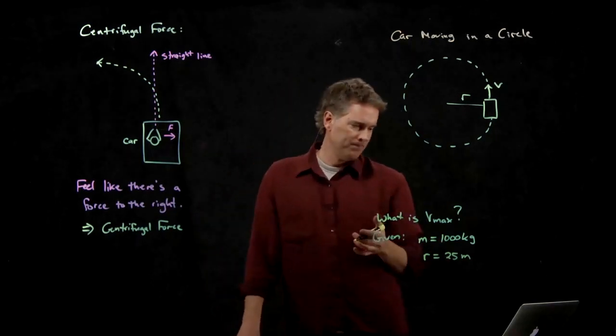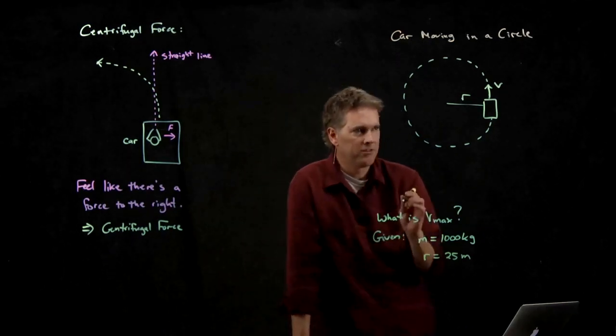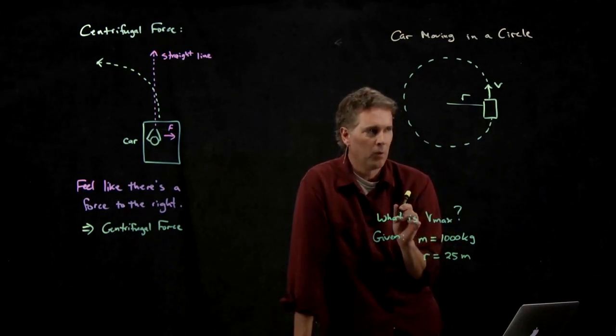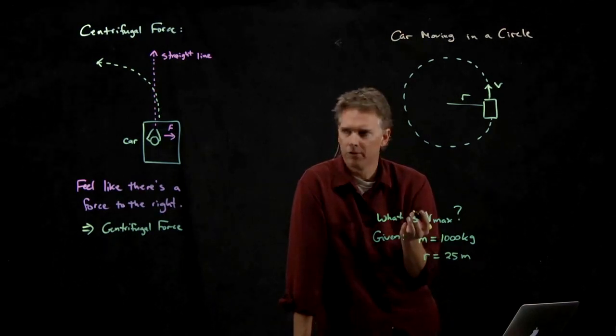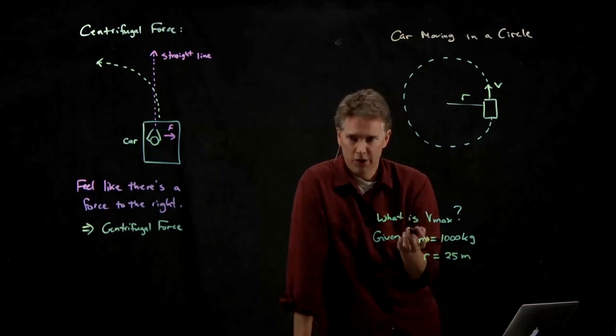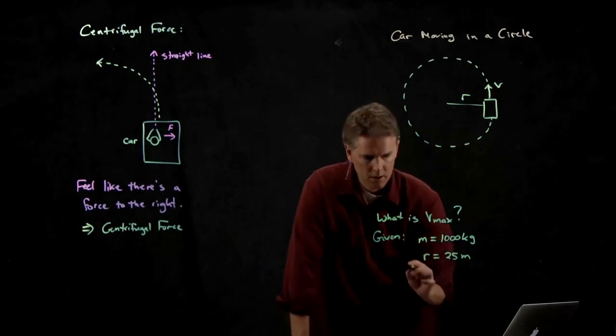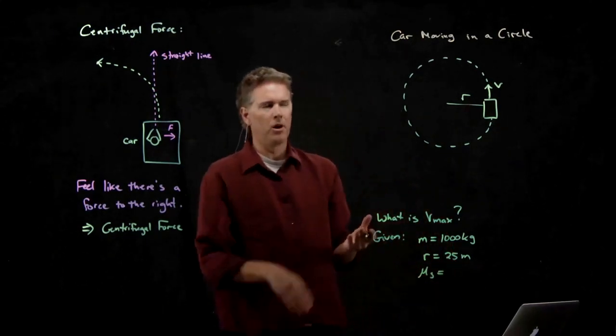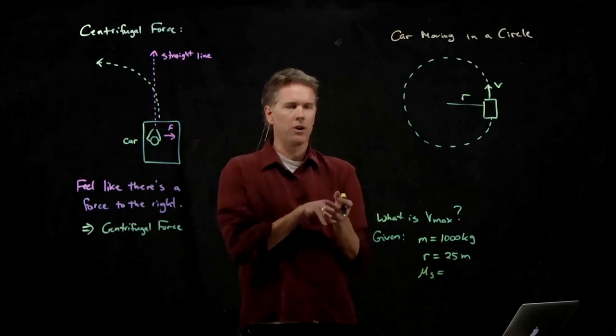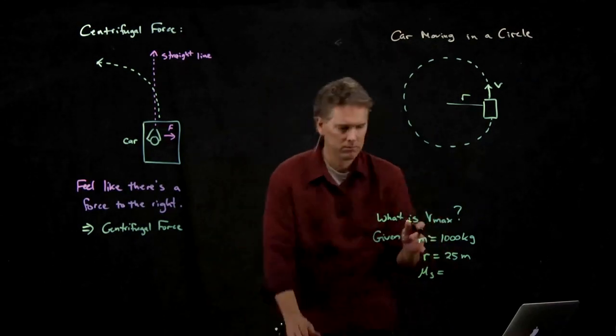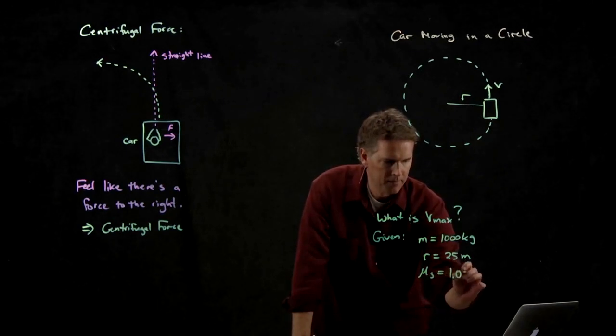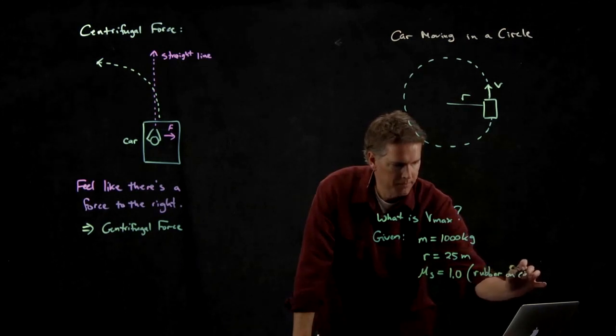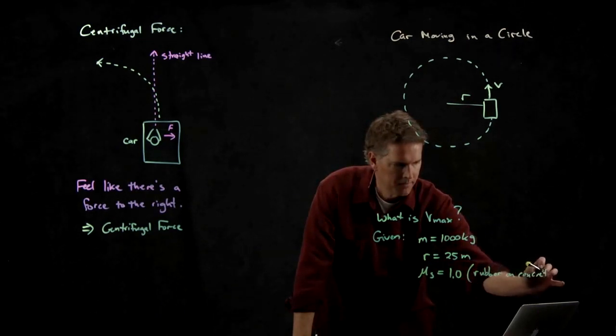What else do we need to know? We need to know something about the force that is holding us in this circle. So what force is actually holding us in that circle? Friction. Static friction. In that case, we need to know what mu s is. What is mu s for rubber on concrete? It's about one for rubber on concrete.